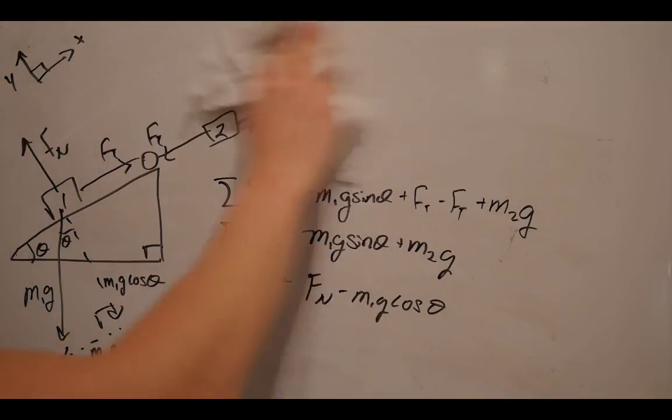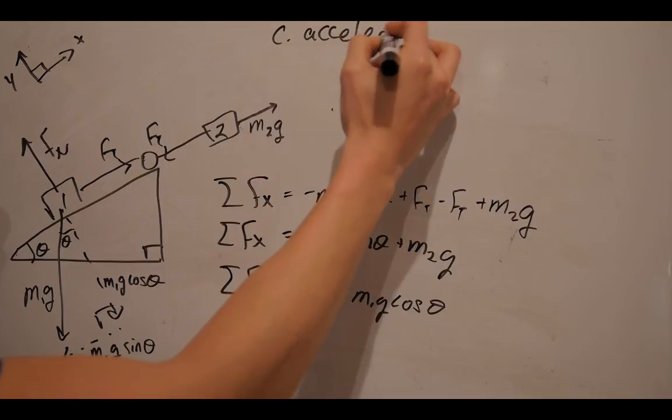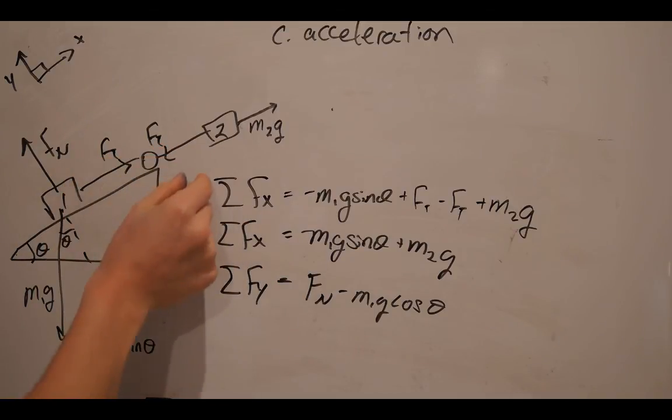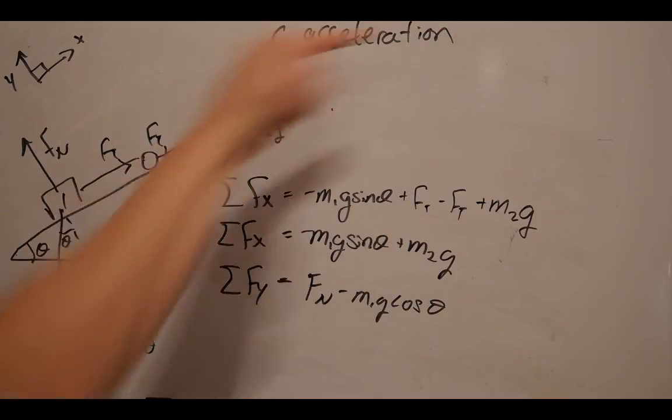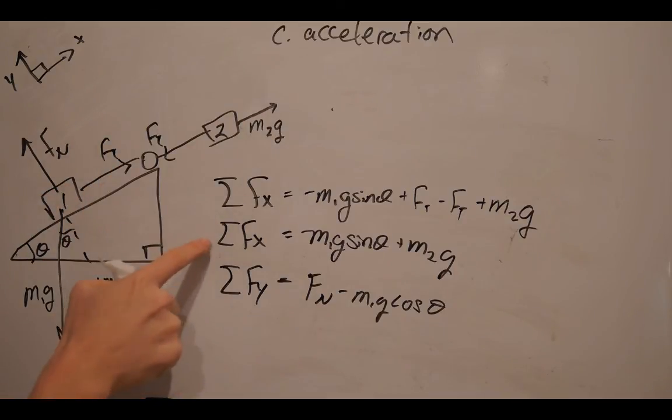Now, question C asks for the acceleration of the system. In order to determine which equation that we have to use to find the acceleration of the system, we have to look at how the object is accelerating. So, when mass 2 moves down, it's going to accelerate mass 1 up the ramp, and that's along the x axis. So, I'm going to use my net force in the x direction equation to determine my acceleration.